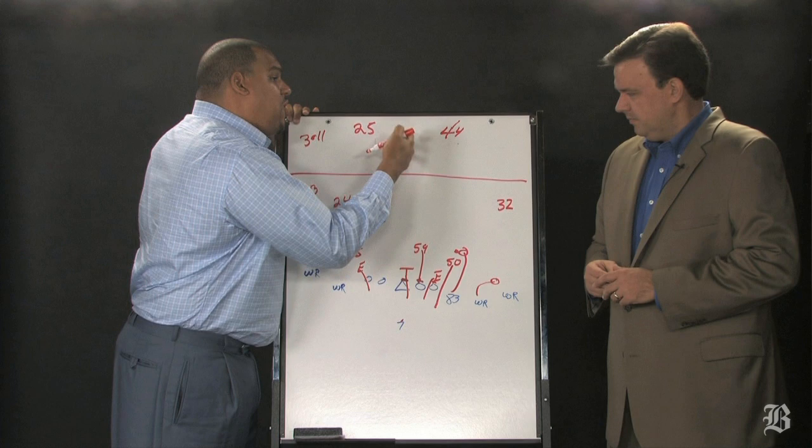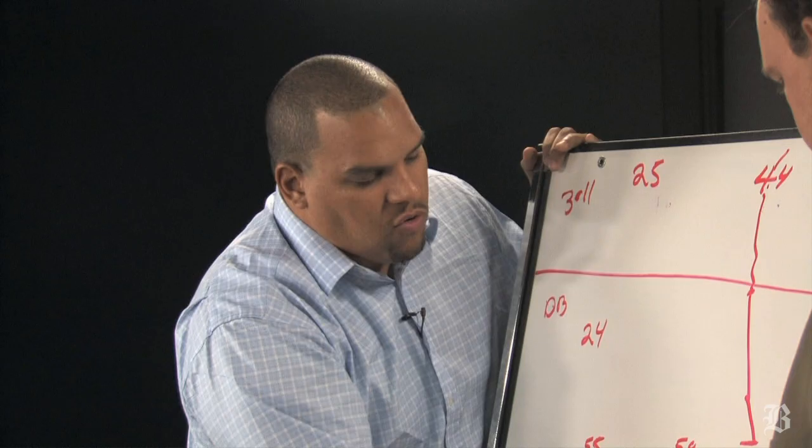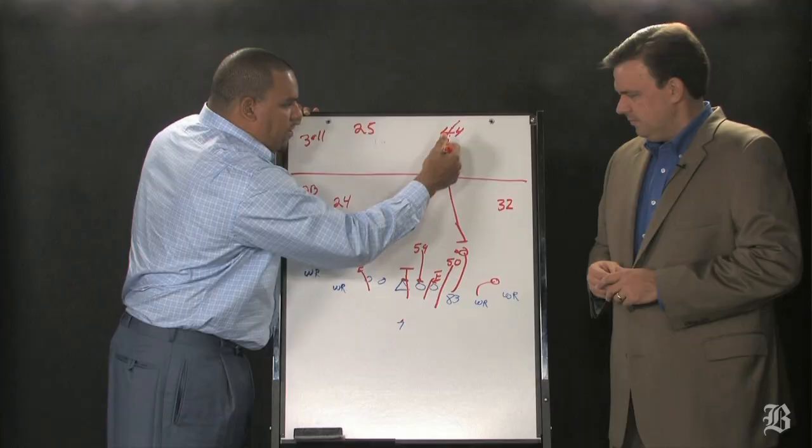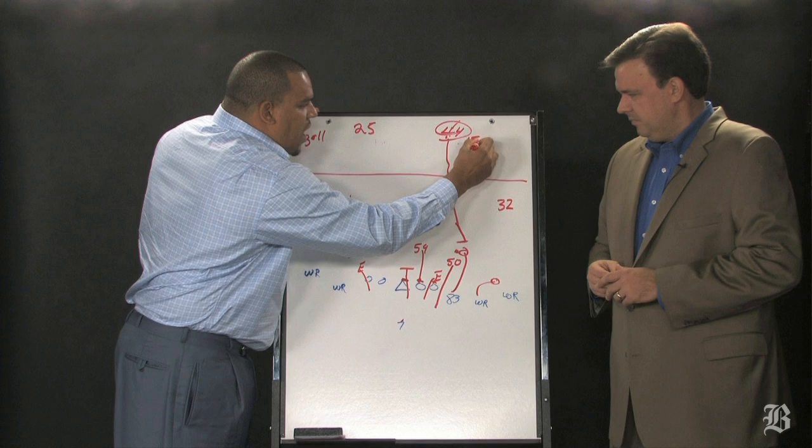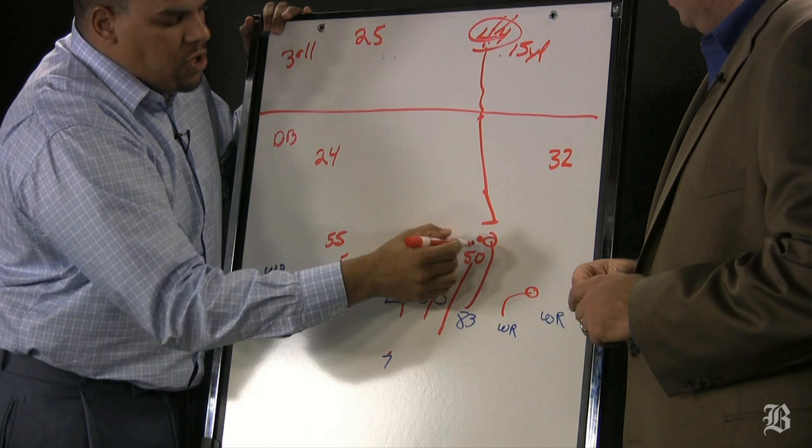You as a safety have to know, when we have this blitz on, I have to be down here. So now when he throws this play, I make the tackle right here for a seven yard gain. Now it's fourth down, Pittsburgh has to kick a field goal. But if you're playing fifteen yards away from the line of scrimmage when it's third and eleven, and your initial thing is to backpedal, you cannot make this play.